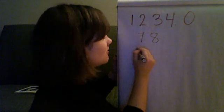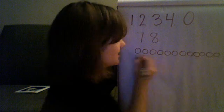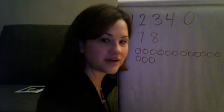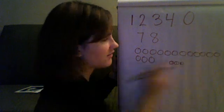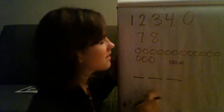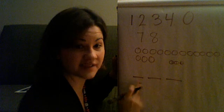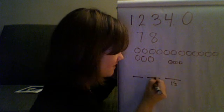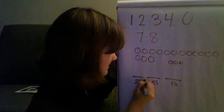To write 78 in base 5, we can't use the numbers 7 or 8, so let's count by 5s using nickels: 5, 10, 15, 20, 25, 30, 35, 40, 45, 50, 55, 60, 65, 70, 75. Those are our fives. Then we need some ones — 76, 77, 78. The places for base 10 are ones, tens, and hundreds. In base 5 it's ones, fives, and five-fives which are twenty-fives.